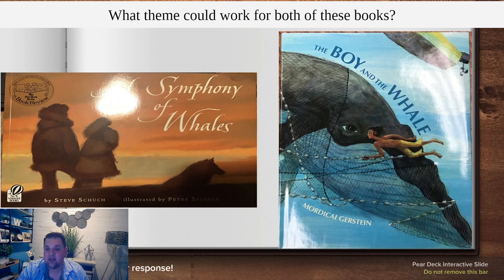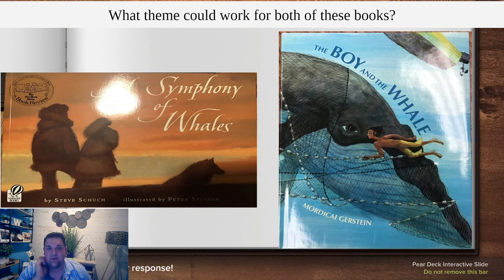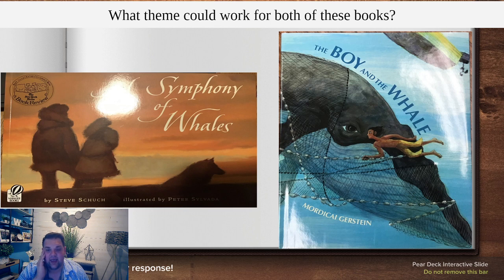The Boy and the Whale is about a dad and boy who were very poor and used fishing nets to collect and sell fish. They went out to check on one of their nets and found a whale caught inside it. The dad was really upset because nets are very expensive and he was worried about how they were going to survive. But the boy was really worried about the whale, and he wanted to free it even though his dad said not to and it was dangerous.